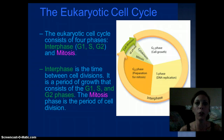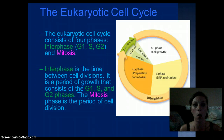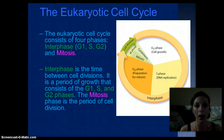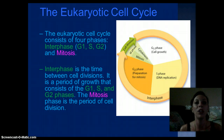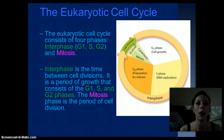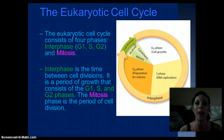First let's talk about the cell cycle. There are four main phases of the cell cycle. They are interphase, which consists of three parts: G1, S, and G2. This is when the cell is in its normal conditions — it's growing and functioning.